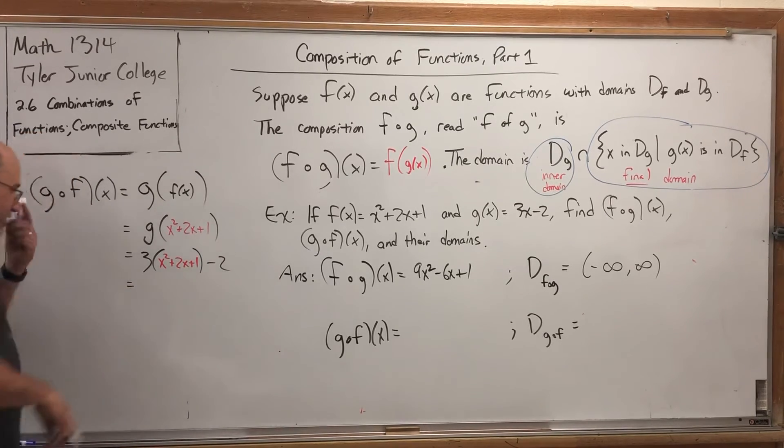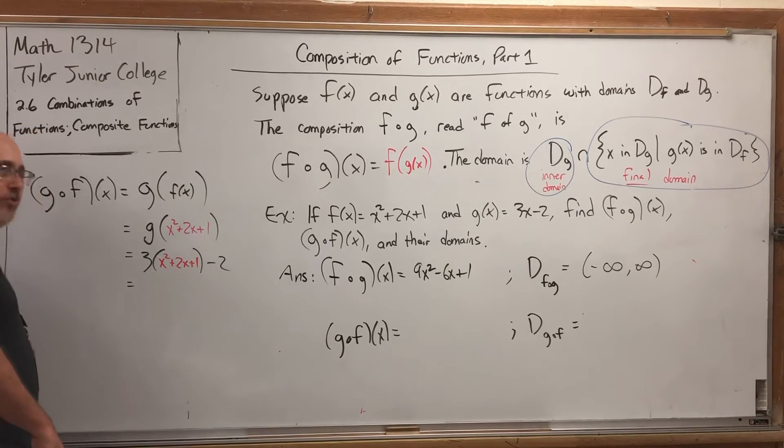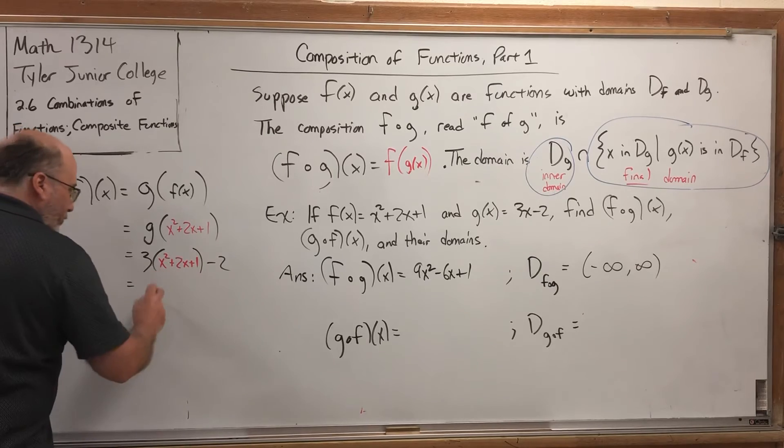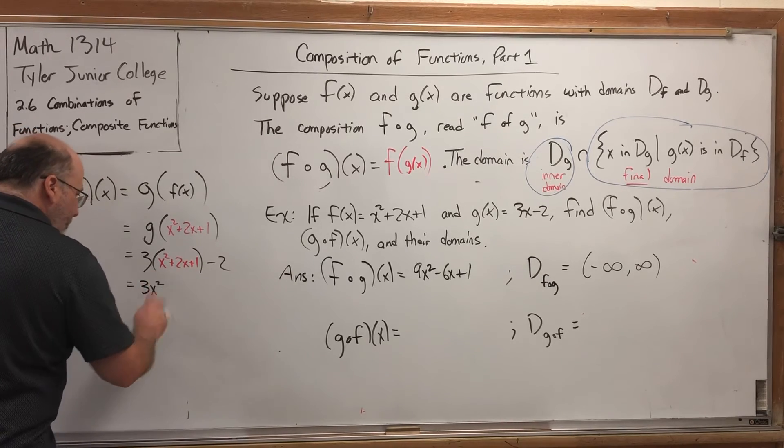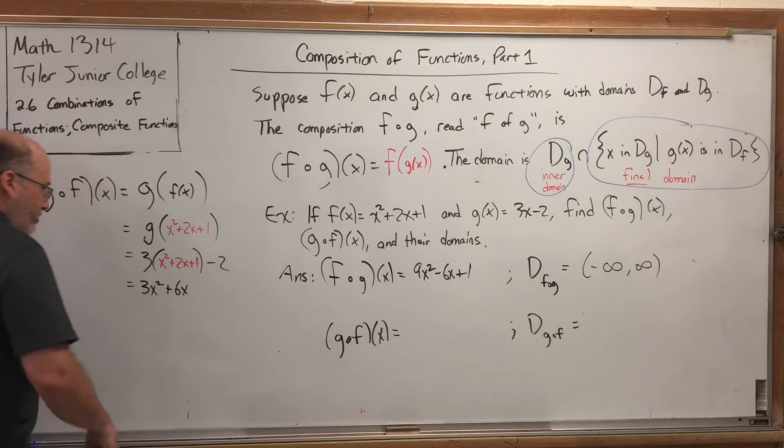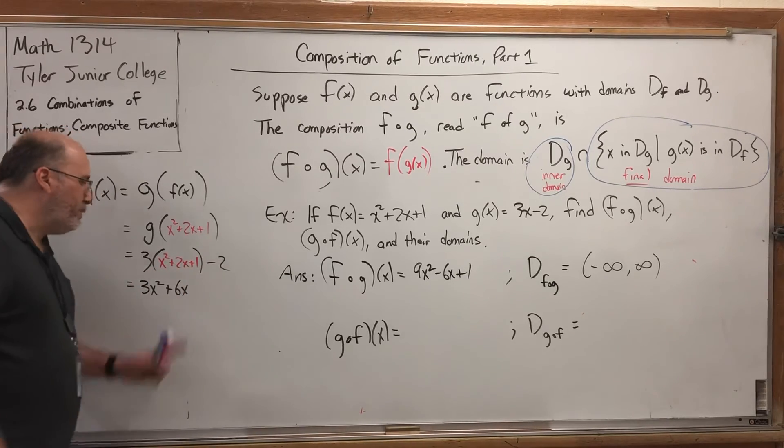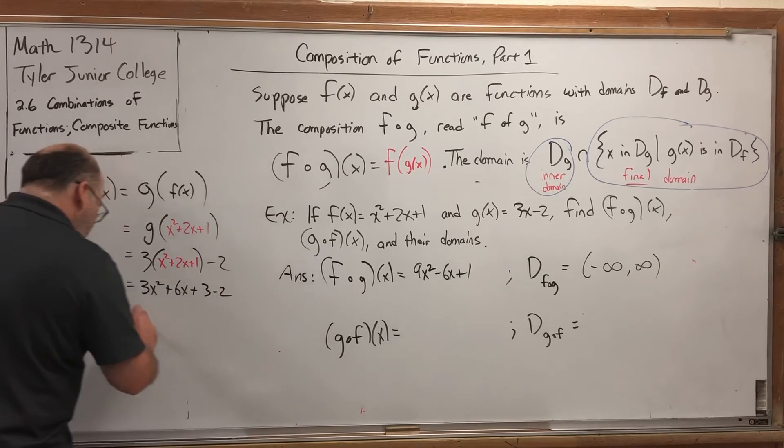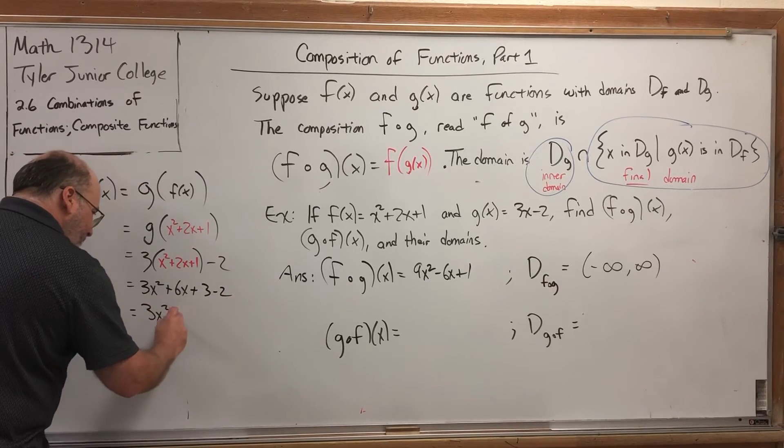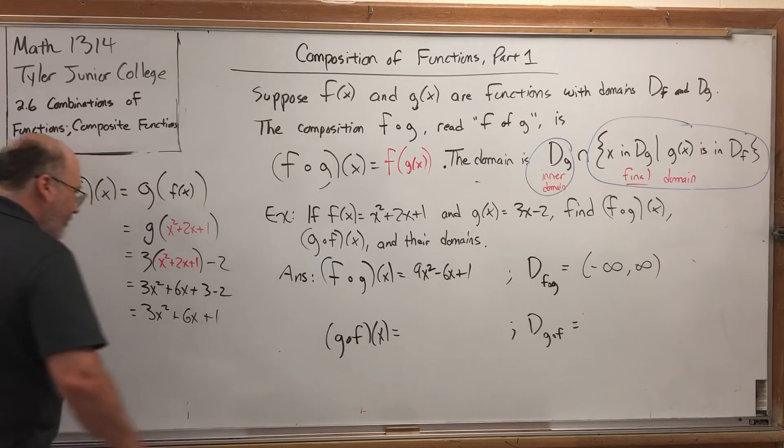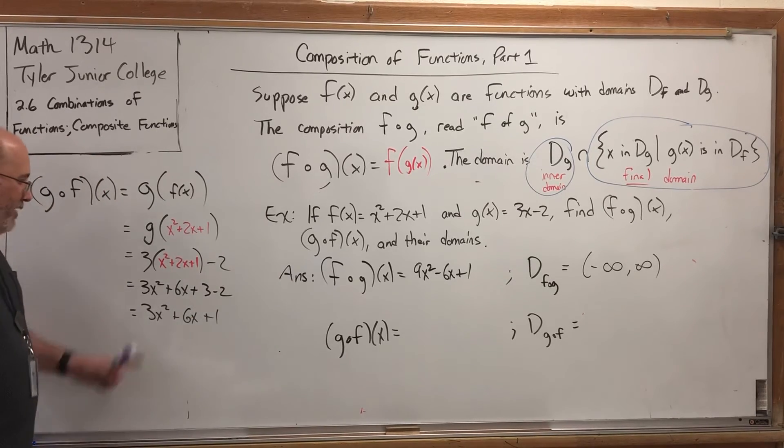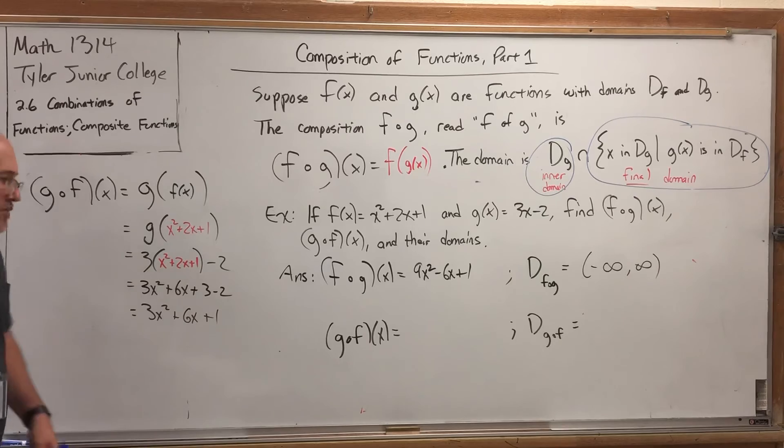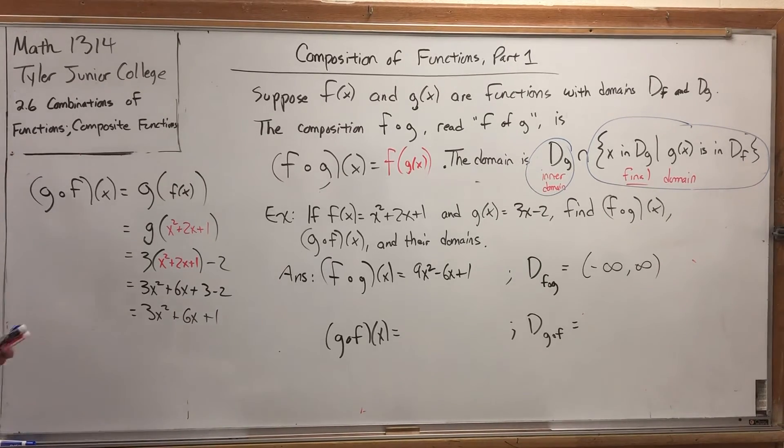So the simplification here is a little bit easier because we're not squaring any binomials. We simply have to distribute the 3 and combine like terms. 3 times x² is 3x². 3 times positive 2x is positive 6x. 3 times positive 1 is positive 3, but then I'm going to subtract 2. I'd better go ahead and write both steps because when I combine those like terms, I'm going to get a plus 1. And if I skip that middle line, you might think, hey, you forgot to distribute, and you forgot the minus 2. But actually, I did both.